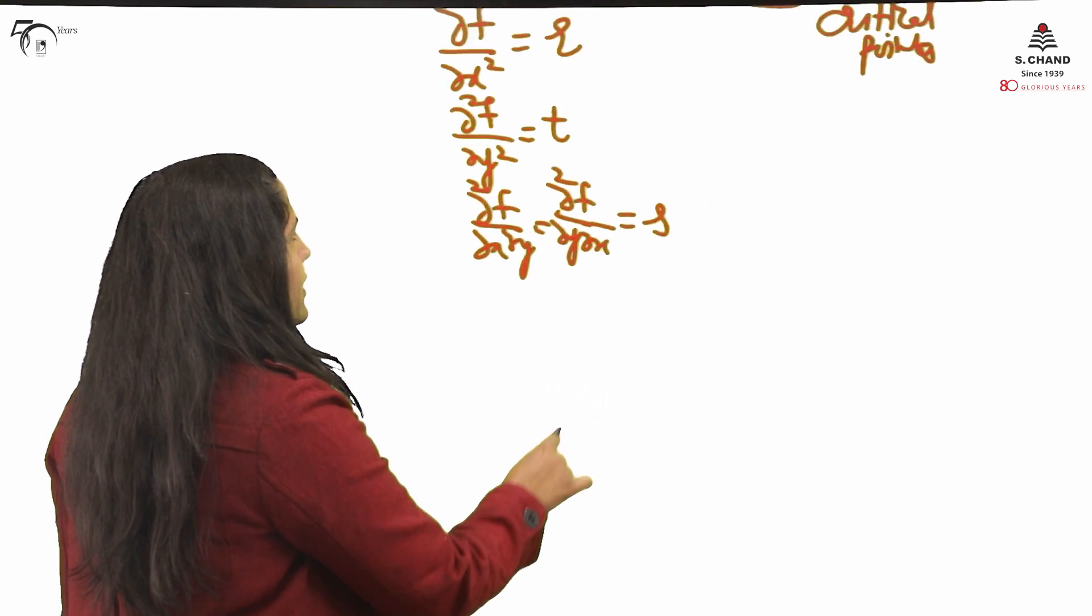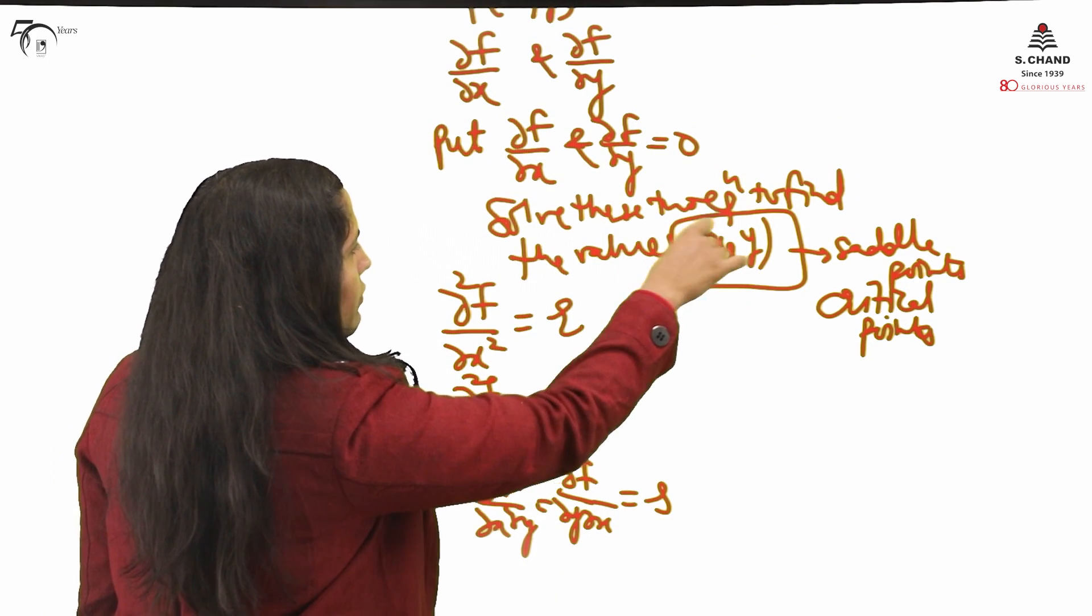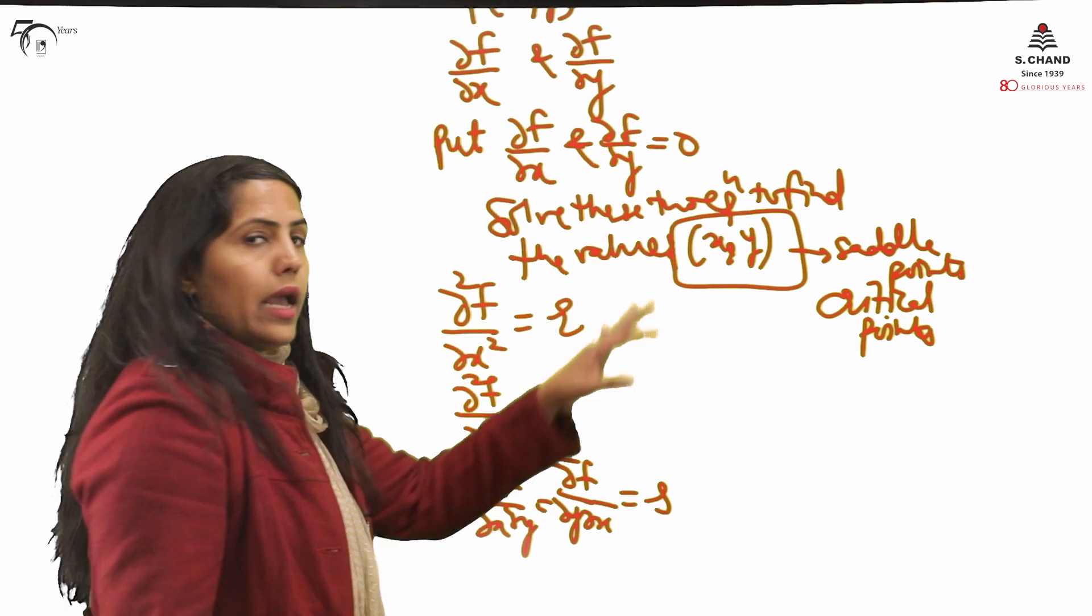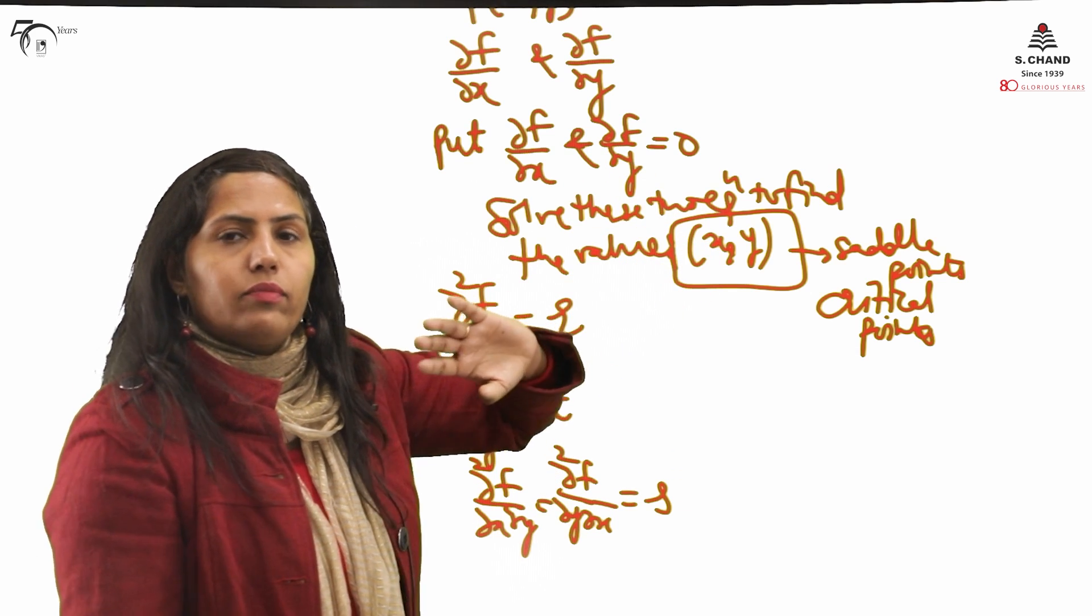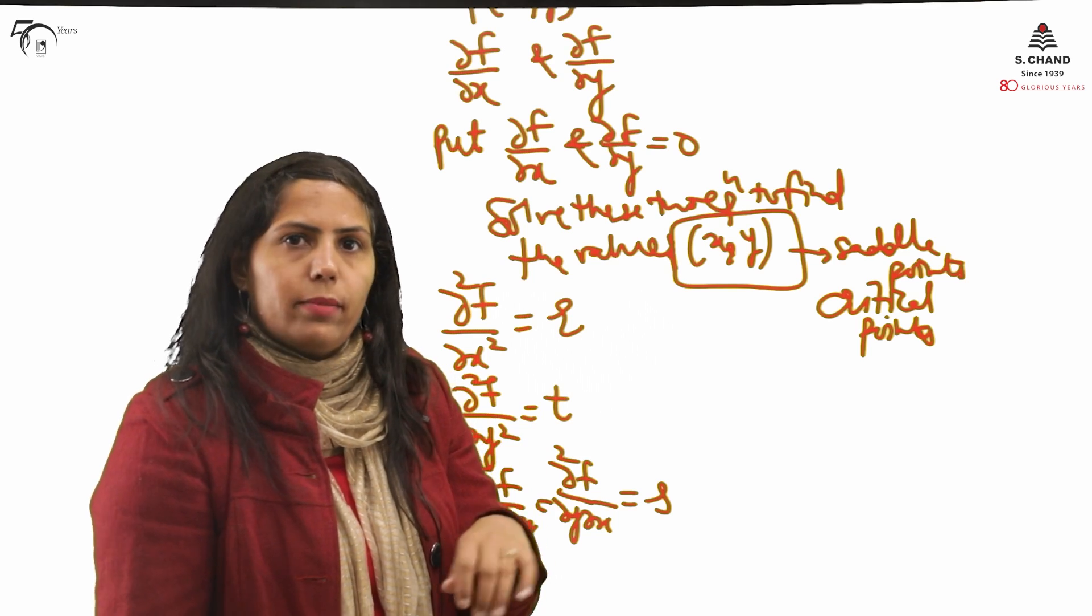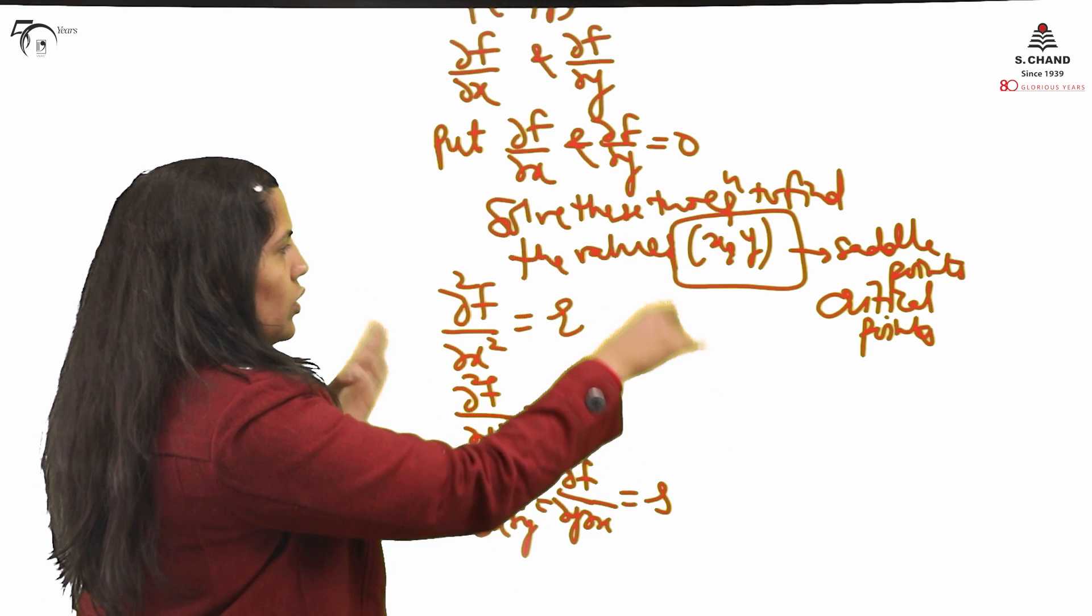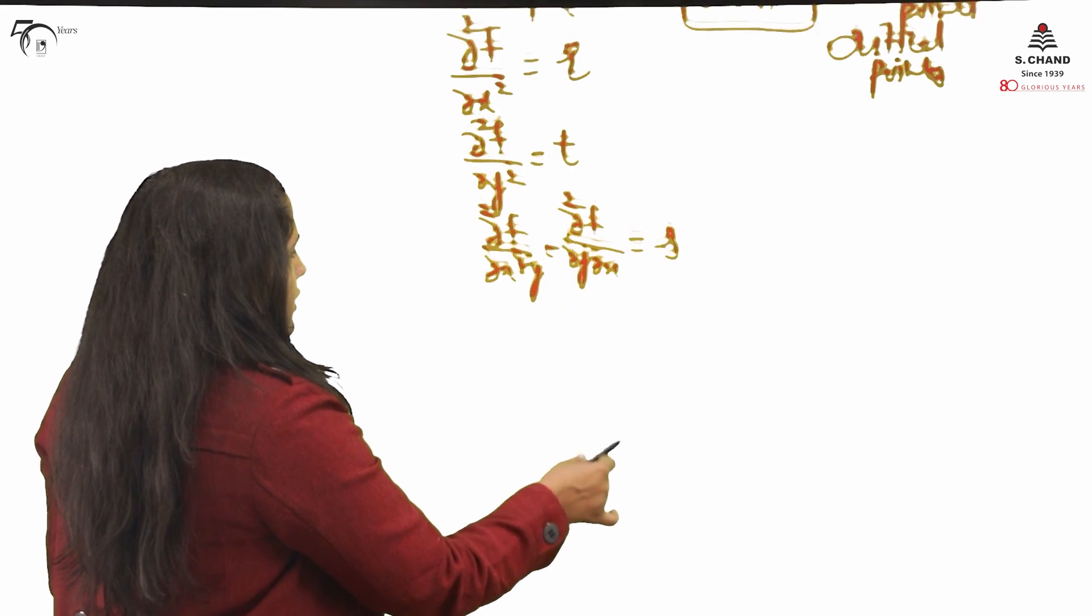Now next step will be... all these values particularly, what I am doing, because some values of x you will be getting, at each point we will be checking whether at that point the function is maxima or minima. The particular checking will be at particular point only, so everything is particularly on a point.